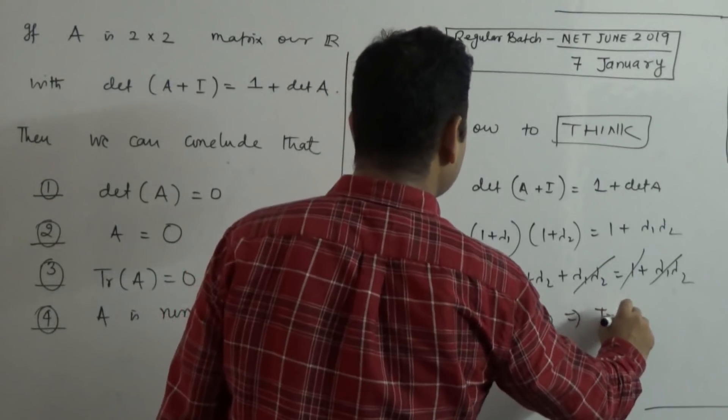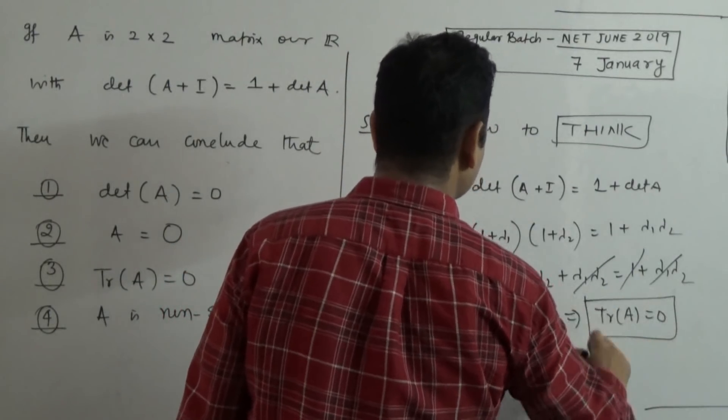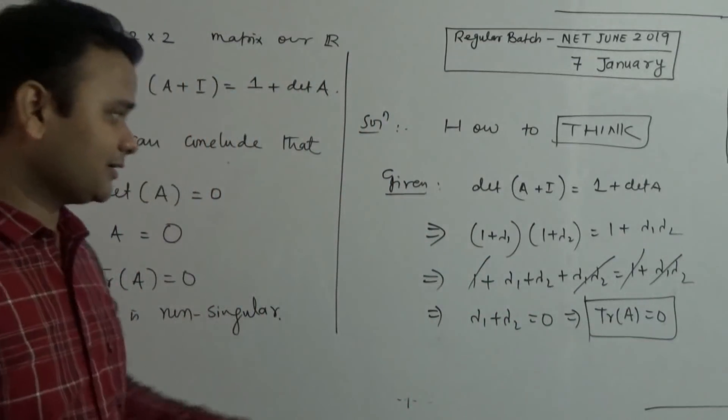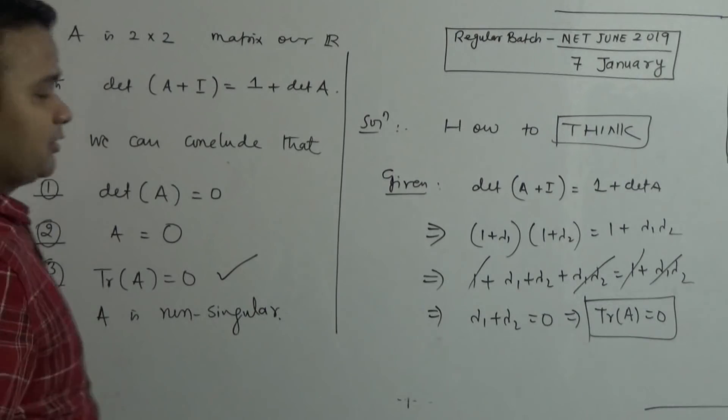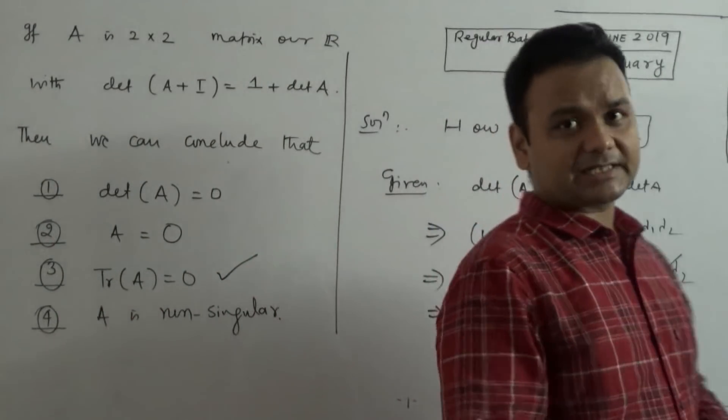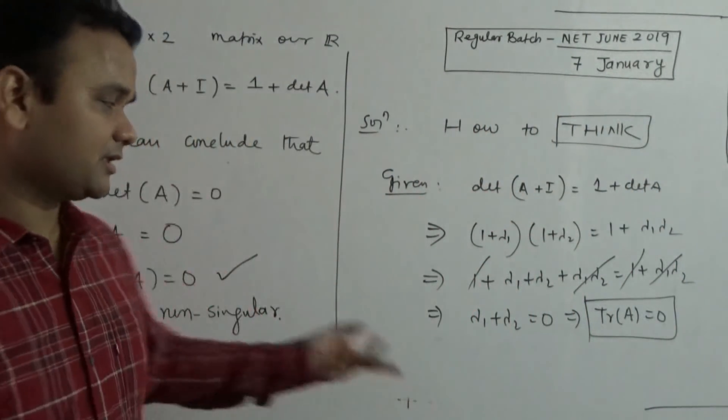That means trace of A is equal to 0. So, here is the conclusion: sum of eigenvalues equals 0 means trace of A equals 0. Because we are solving for NET section, only one option is correct. So, this is done now.